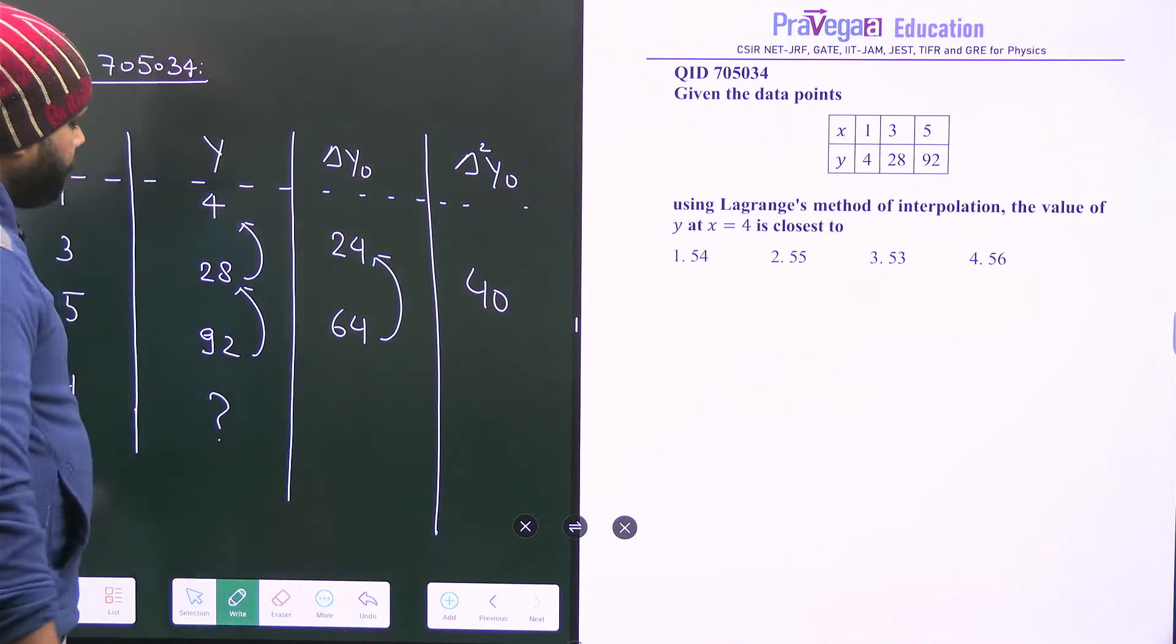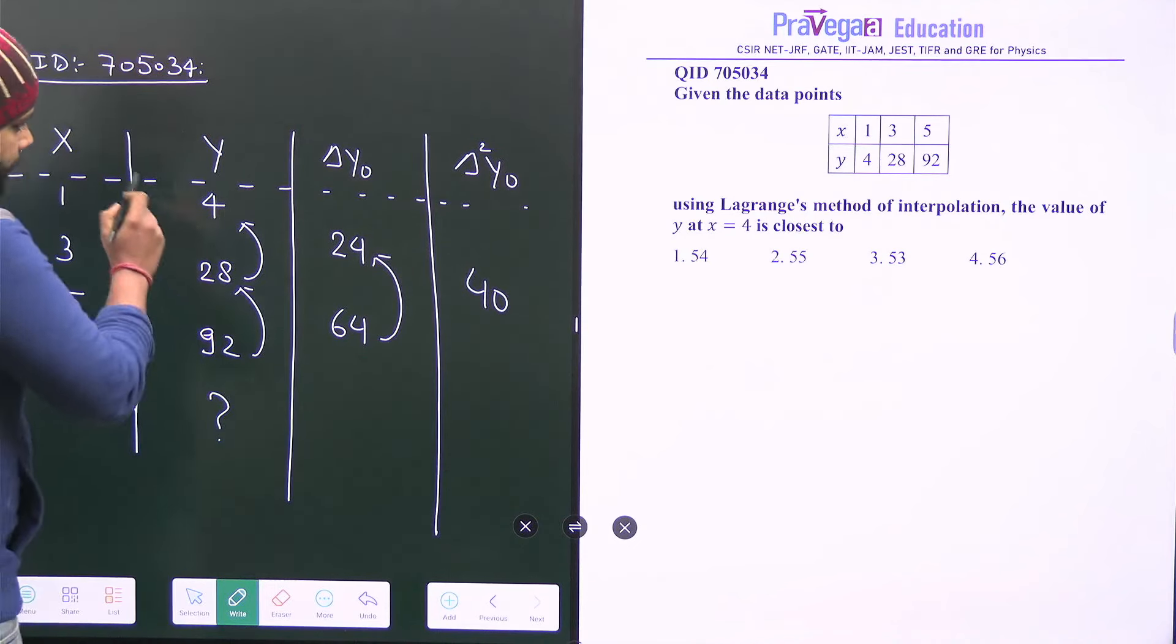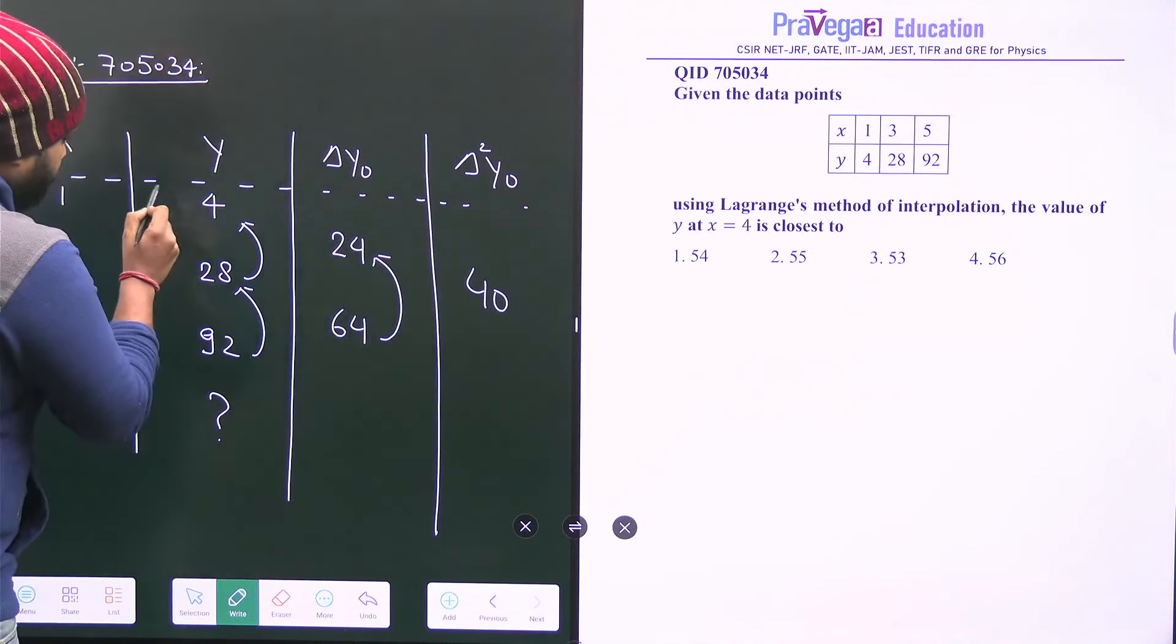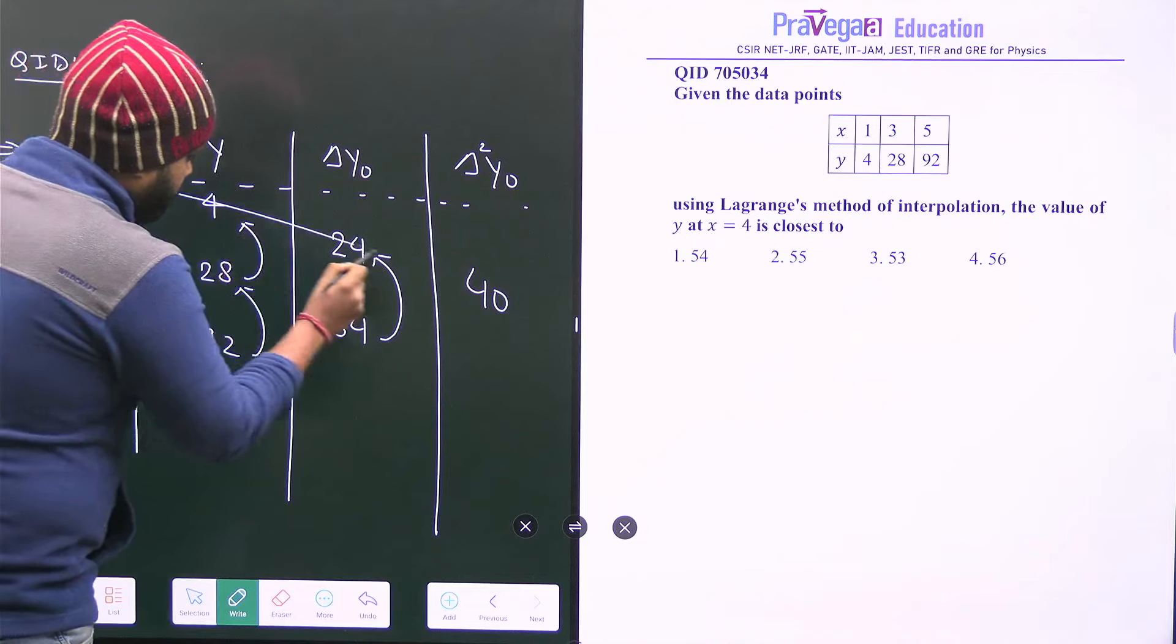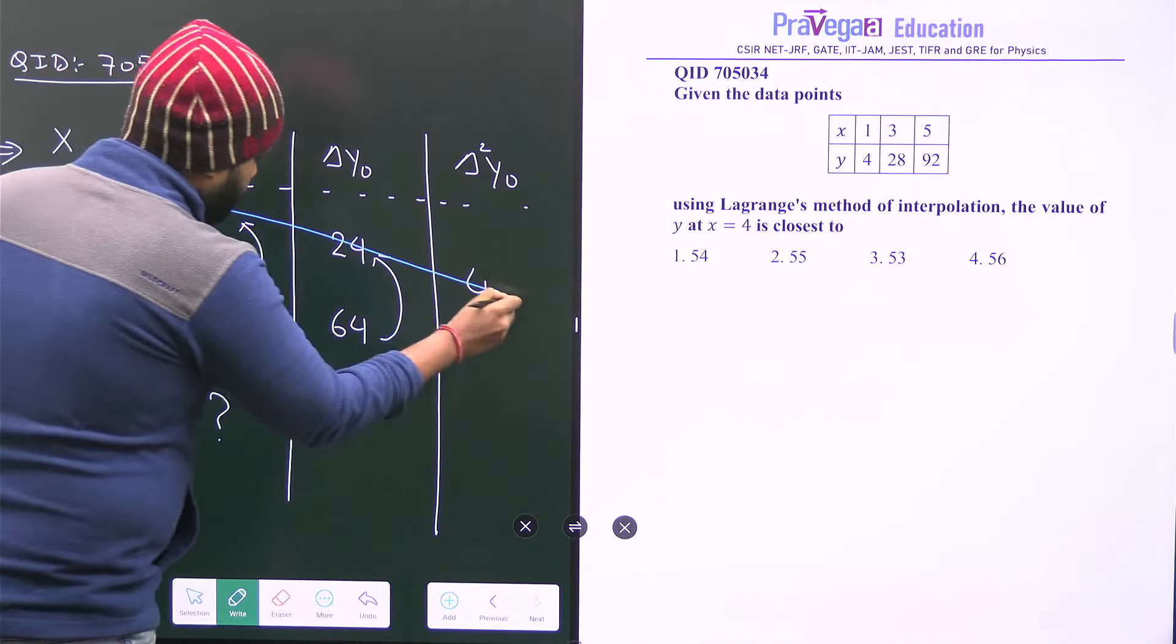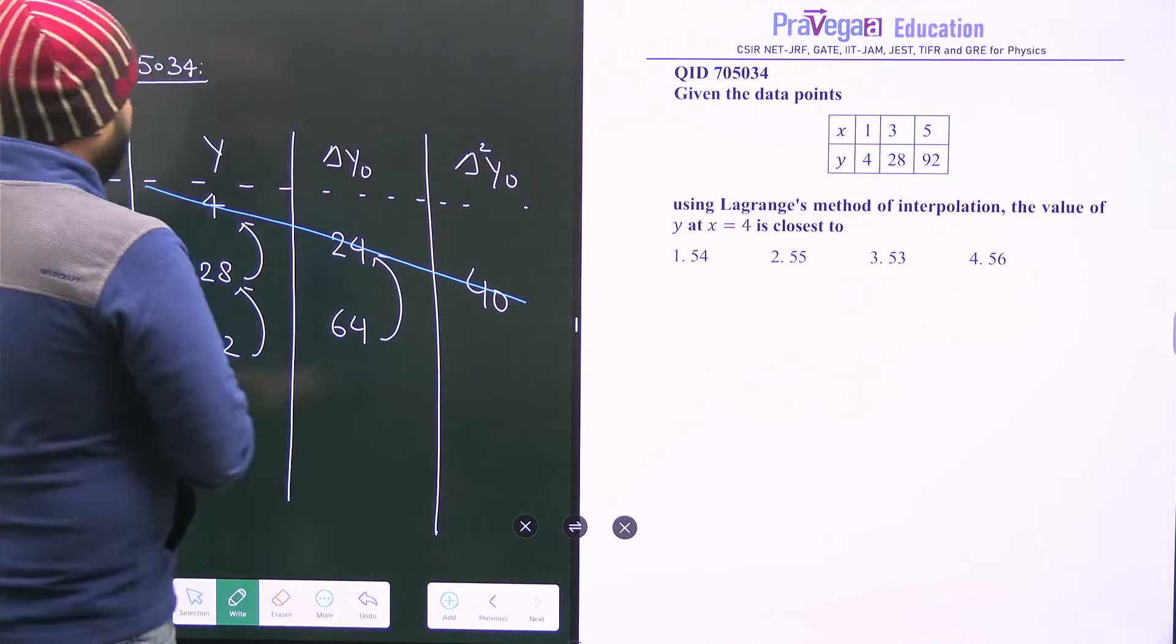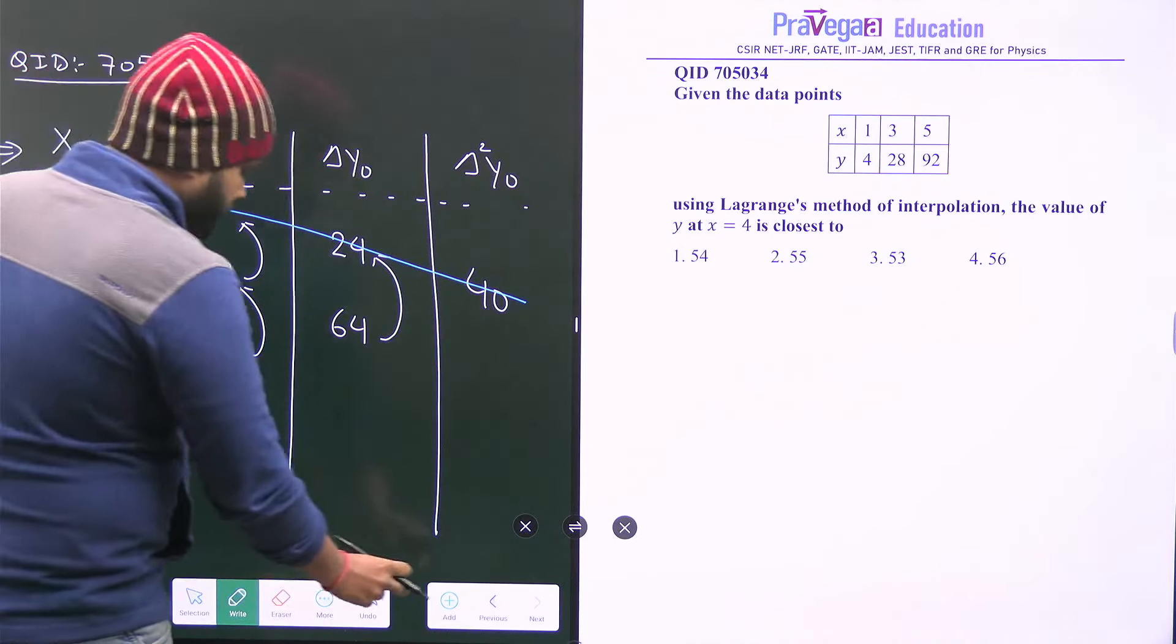And we have to use the forward difference method, Newton's forward difference method. So what do we do? We have to take the values up to the top. Just you have to take these values. I am writing from this pen and this value. So I am writing the values here.